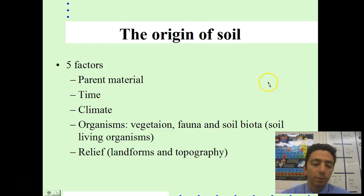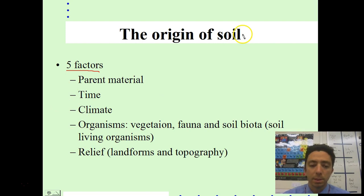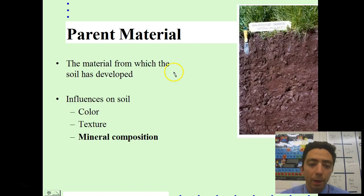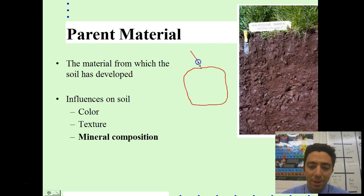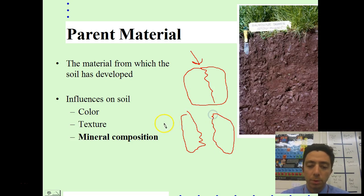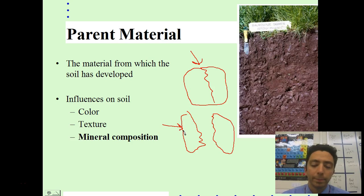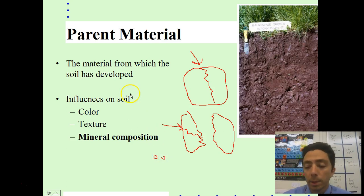The origin of soil: there are five major things to be aware of for how soil forms. The first is parent material, which is essentially rocks — it's where the soil comes from. Something breaks the rock, and then those smaller rocks get hit with rain, snow, or an animal, breaking them again and again until we end up with tiny little pieces that are a major component of the soil.